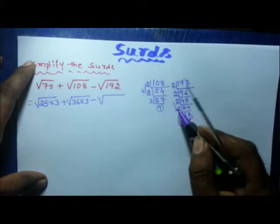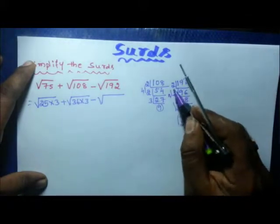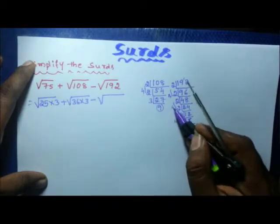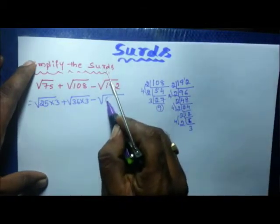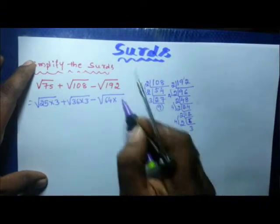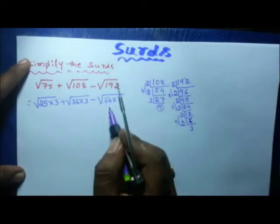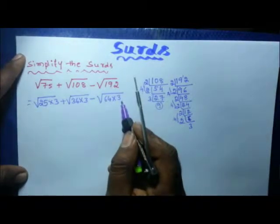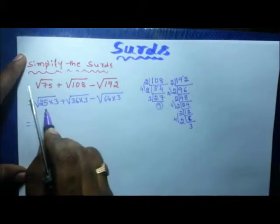Pairing the 2s: 2 to the power 4 is 16, and 4 times 16 is 64. So 64 into 3 is 192. Therefore 64 is the square number and 3 is the remaining number. So we write minus square root of 64 into 3.